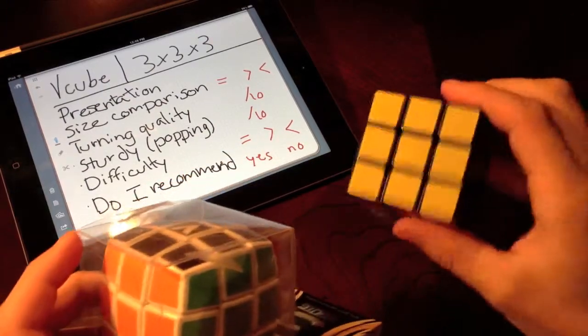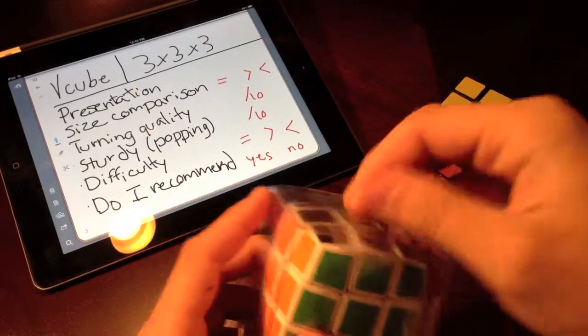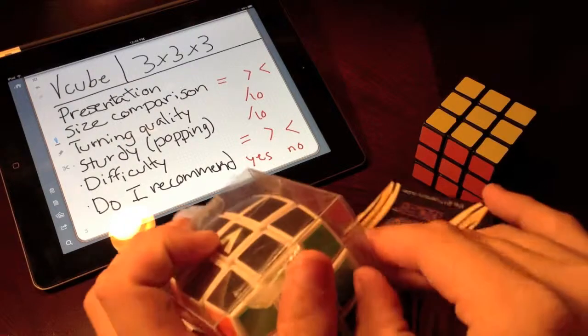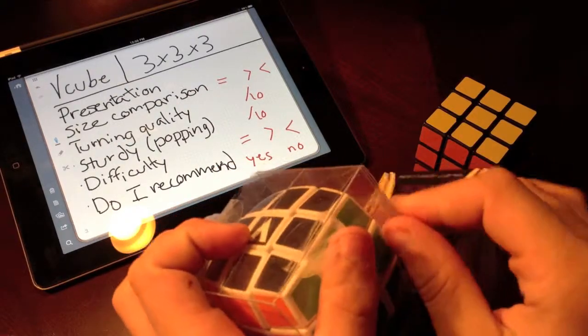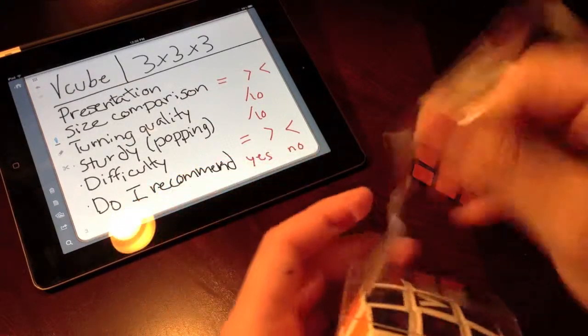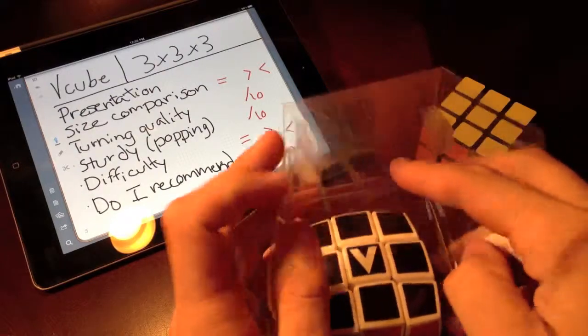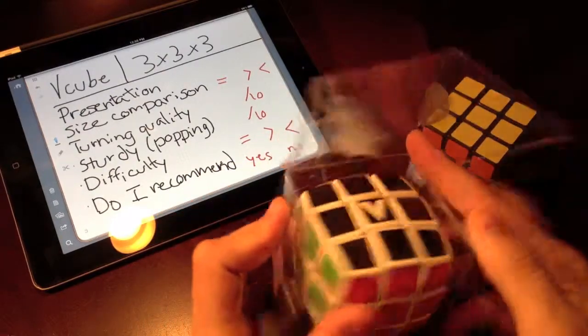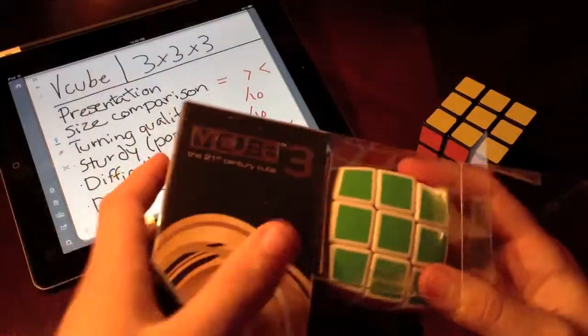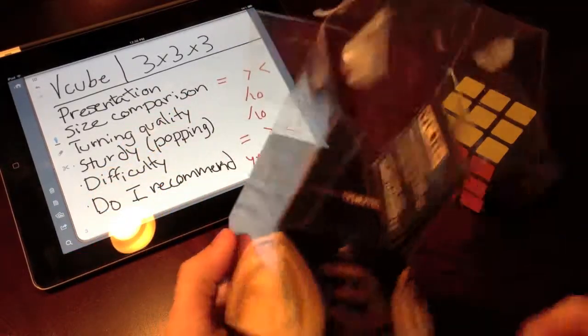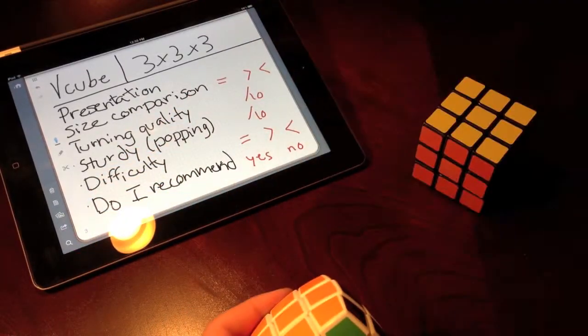Obviously it's gonna move just like a normal 3x3 because it is just a 3x3. What I'm wondering is does it move really well out of the box? All right, that's a pretty fancy package. Let's just put it aside.